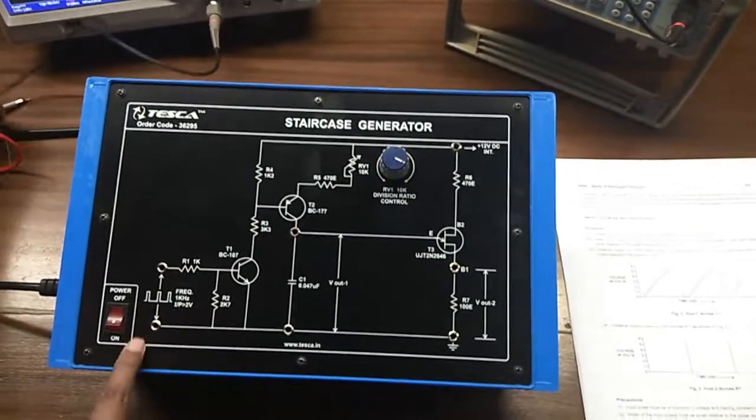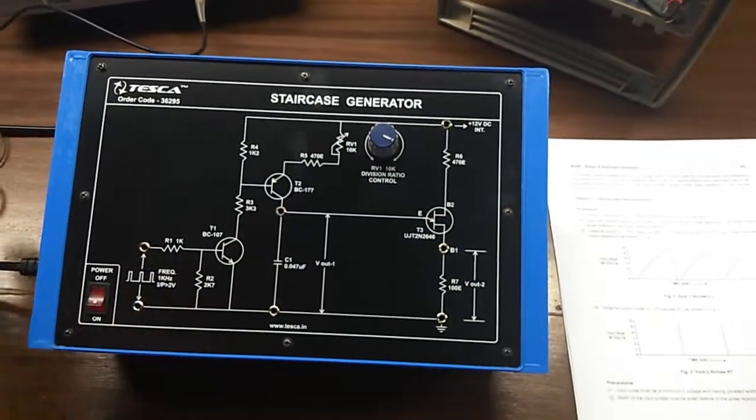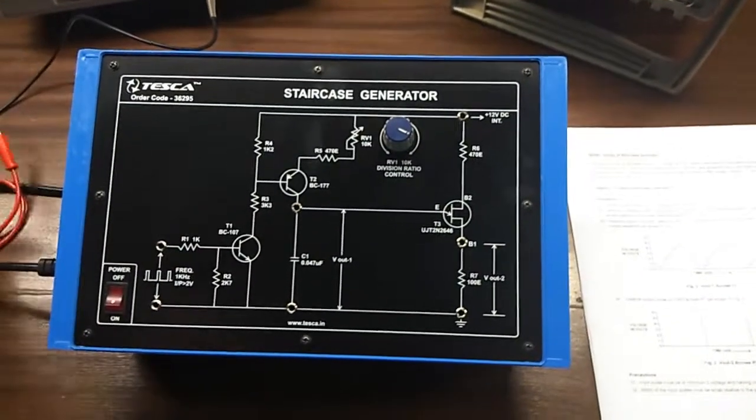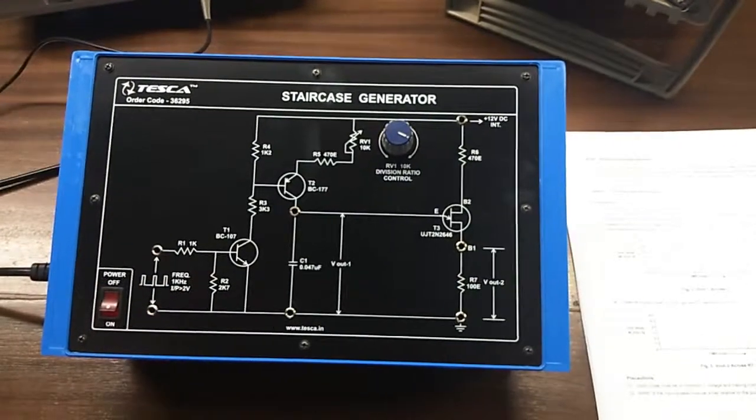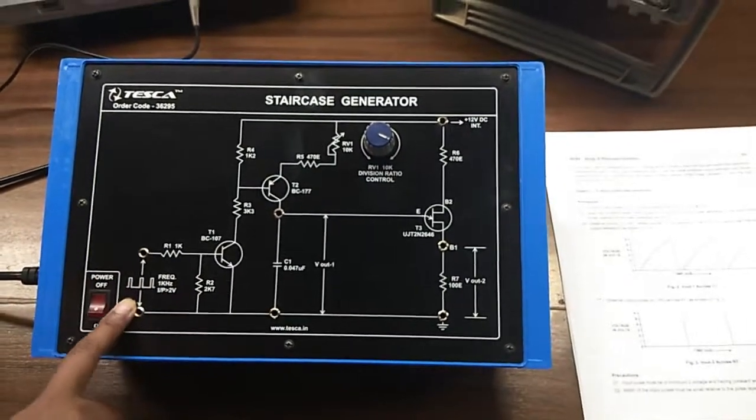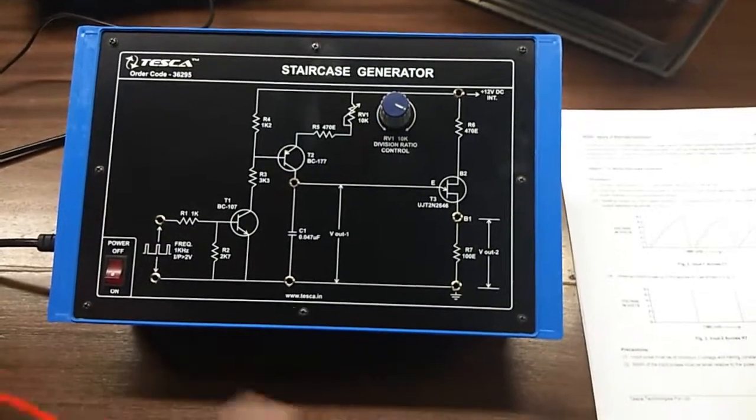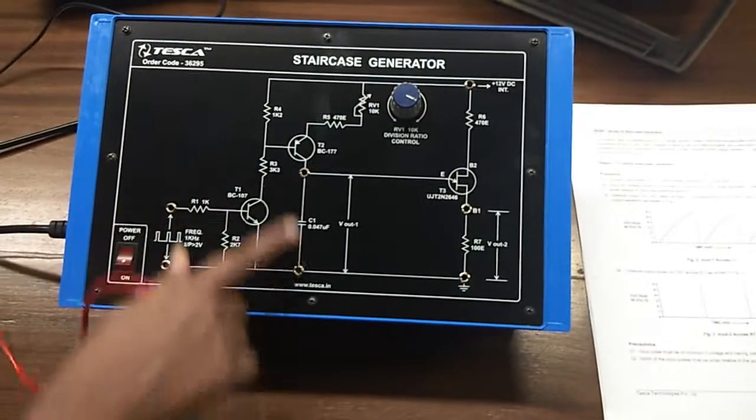For this, the circuit is already inbuilt here, so we do not need to build any additional connection. We need to give input here, a pulse frequency of 1 kilohertz, and we will see the output here across C1.